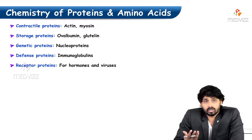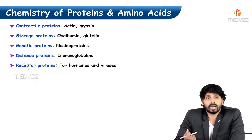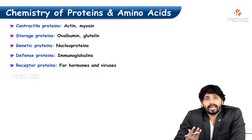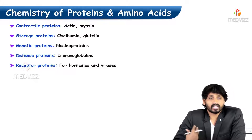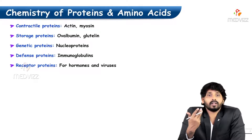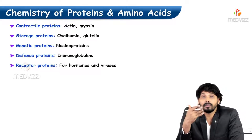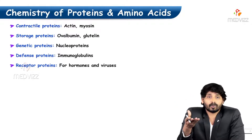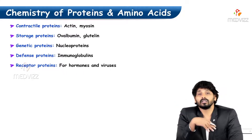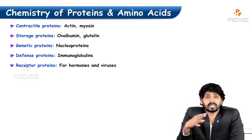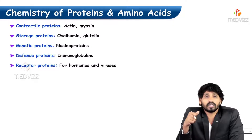Storage proteins store amino acids — for example, ovalbumin in egg and glutelin in wheat. Genetic proteins, such as histones, are nuclear proteins surrounding nucleic acids DNA and RNA. Defense proteins include immunoglobulins: IgA, IgG, IgM, and IgD. Finally, receptor proteins are proteins in the cell membrane acting as receptors for hormones and some viruses.